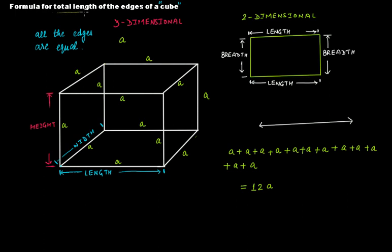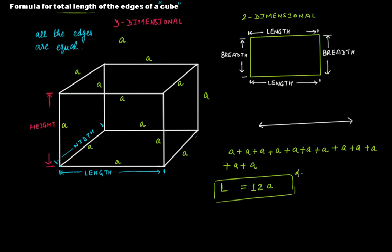If we represent the total length of the edges using capital L, where capital L tells us the total length of all the edges of a cube and 'a' represents the length of one edge, then the total length of all the edges of a cube will be L = 12a. This is a very interesting formula that you will use a lot when you move to higher standards.